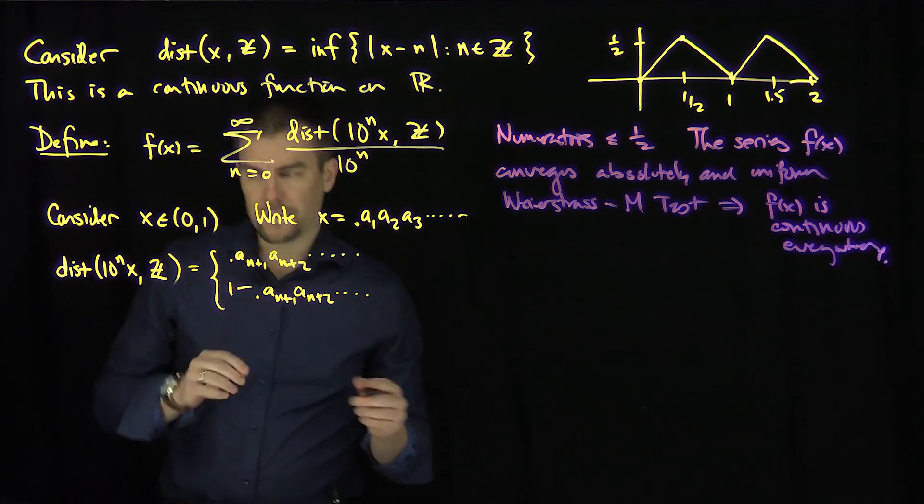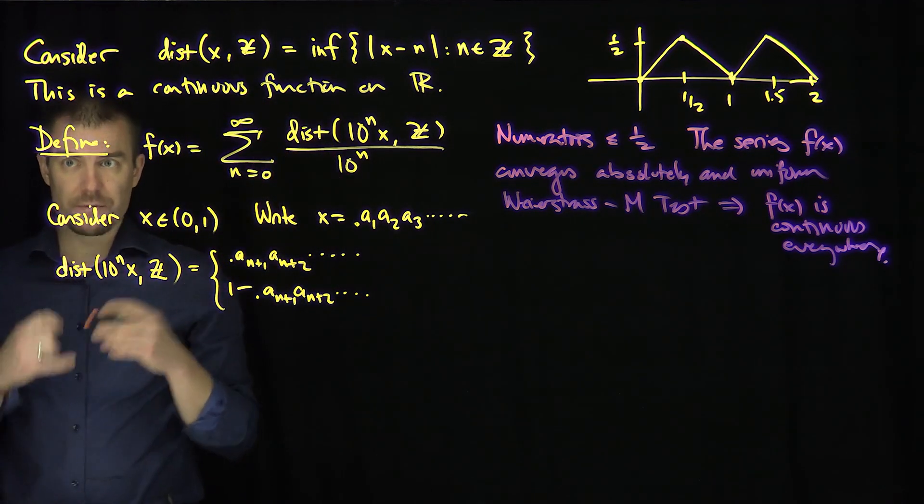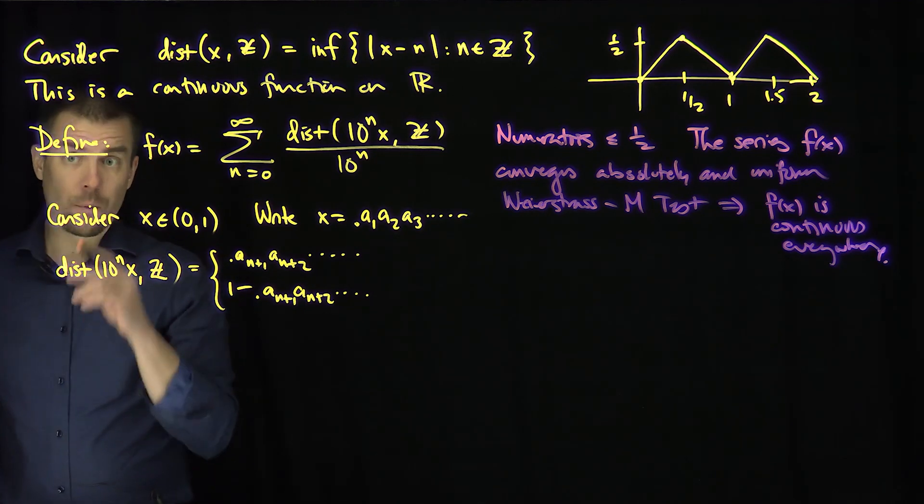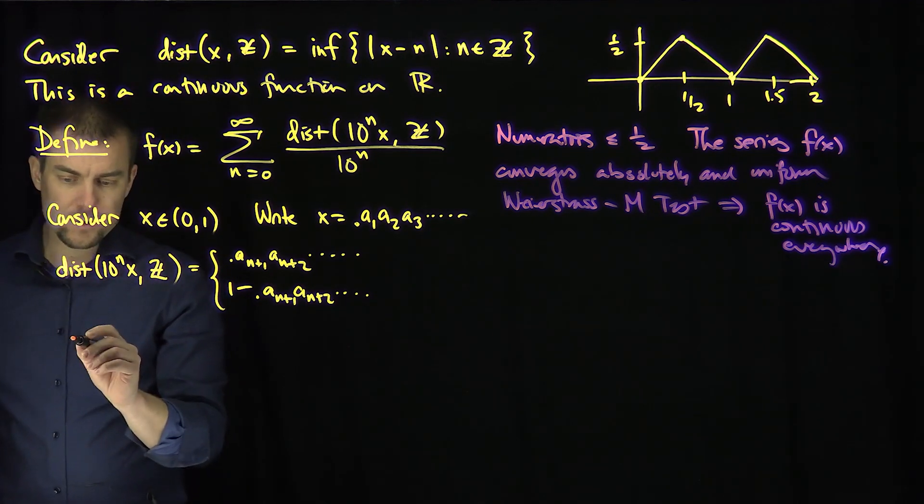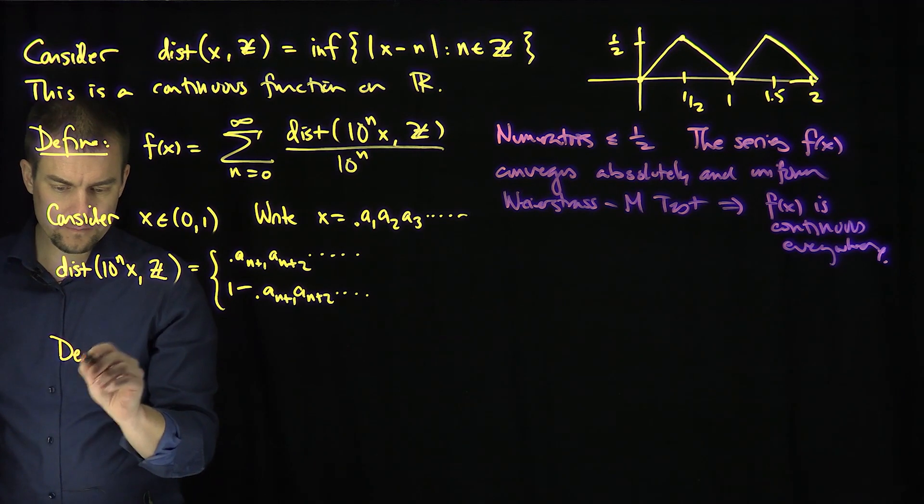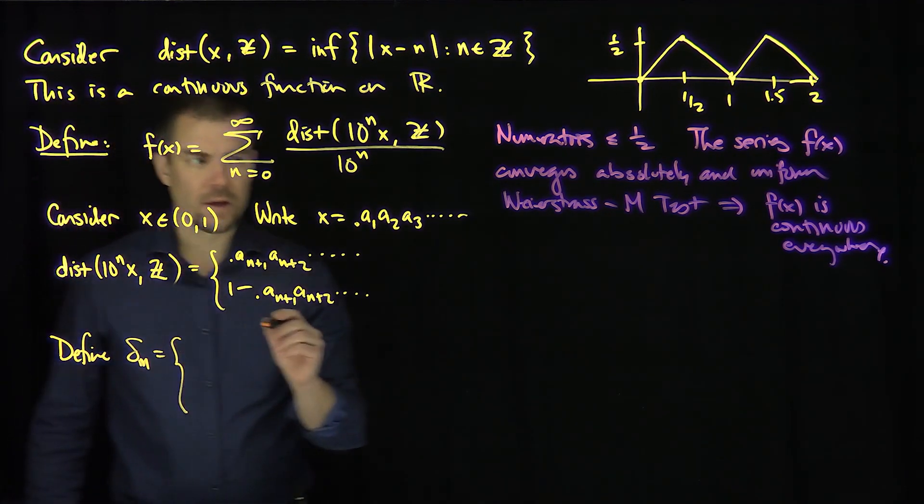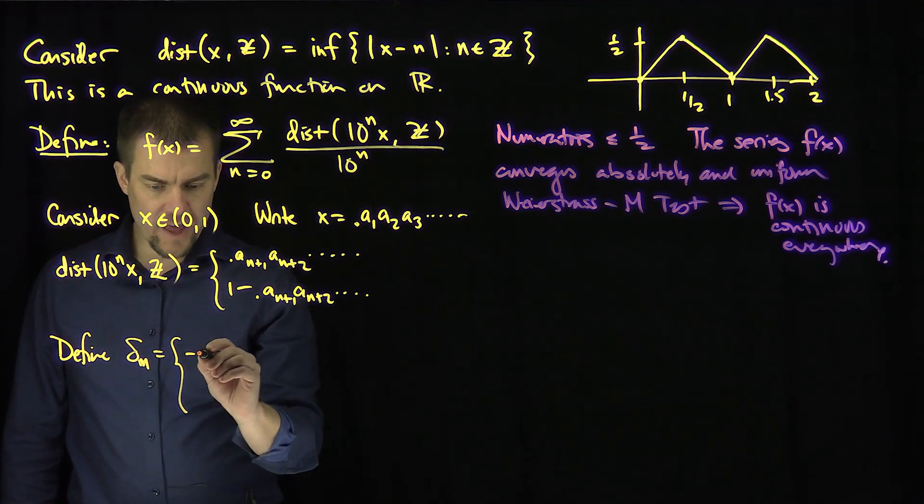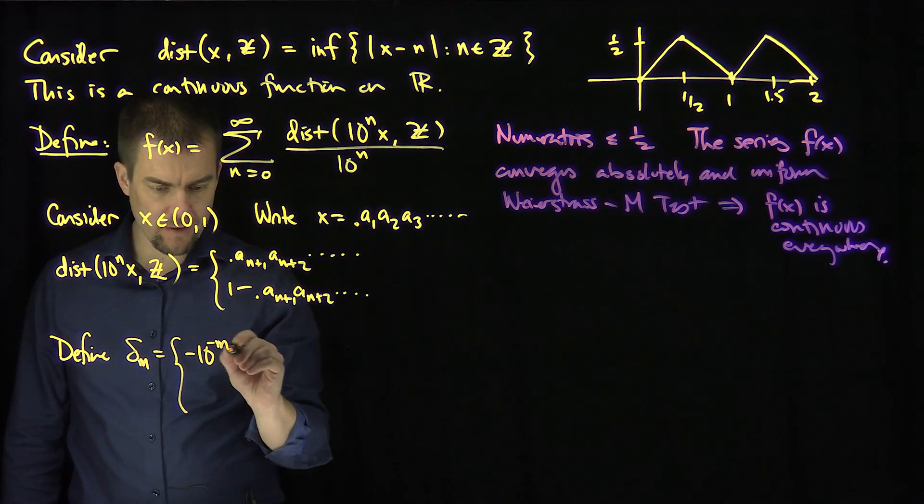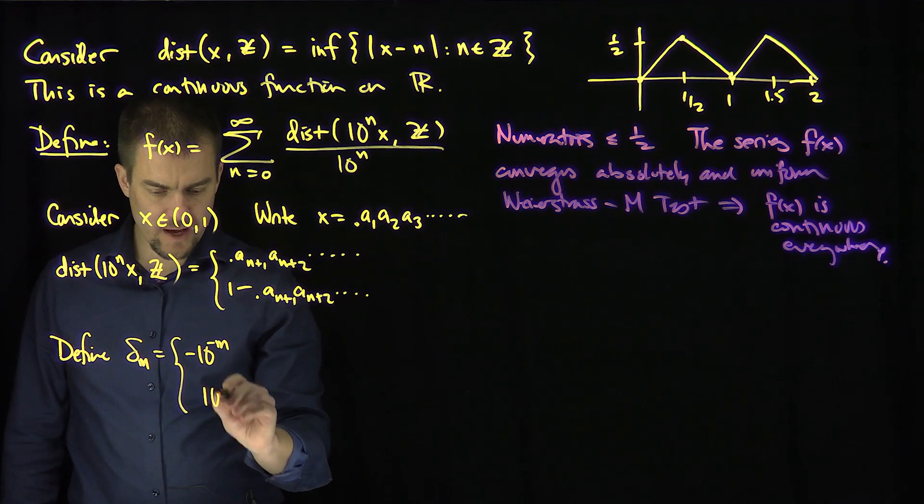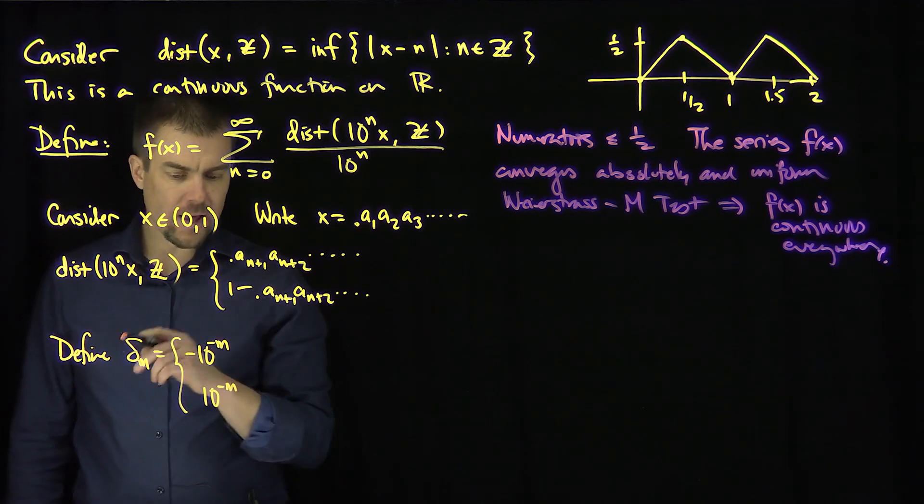And what I'm going to do now is I'm going to define a sequence of numbers that are going to zero that will depend on x itself. So define delta_m to be one of two things: it's either going to be -10^(-m) or it's going to be 10^(-m).